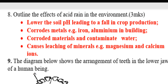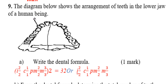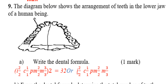Number nine: The diagram shows the arrangement of teeth in the lower jaw of a human being. This is how teeth are arranged. To write the dental formula: incisors — two up, two down; canines — one up, one down; premolars — two up, two down; molars — three up, three down. This gives a total of 32. This question appears many times in KCSE and other biology exams, so you must know how to write the dental formula.